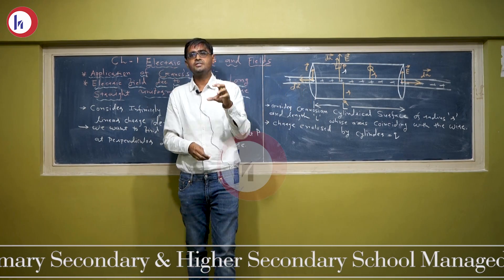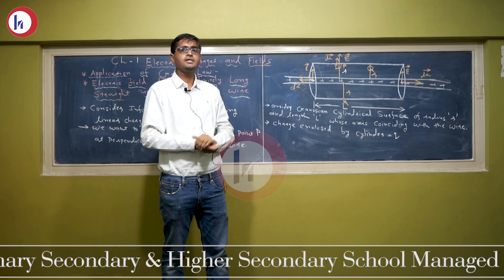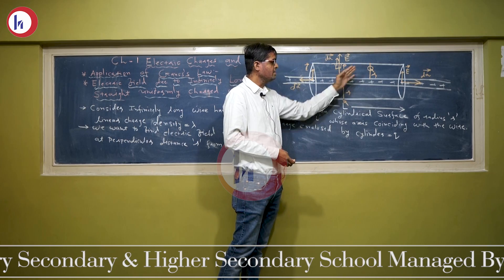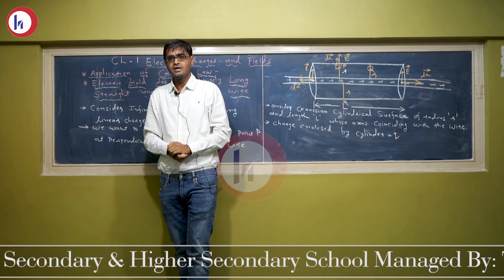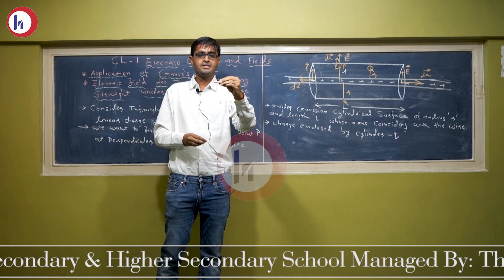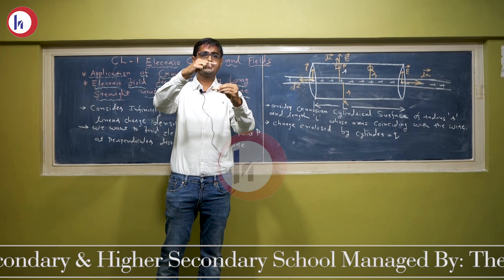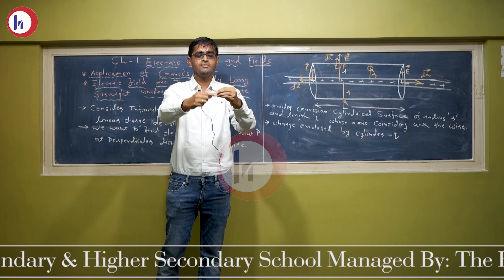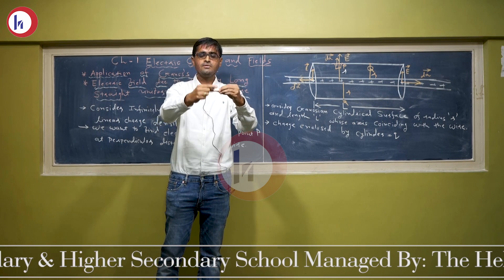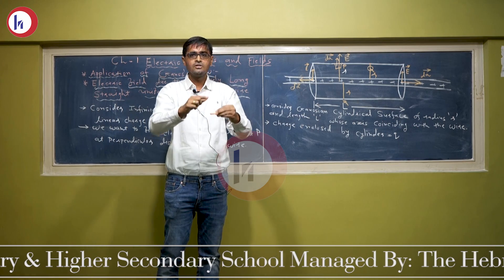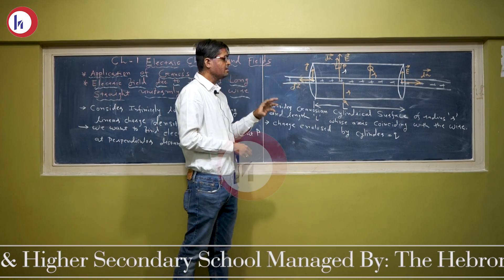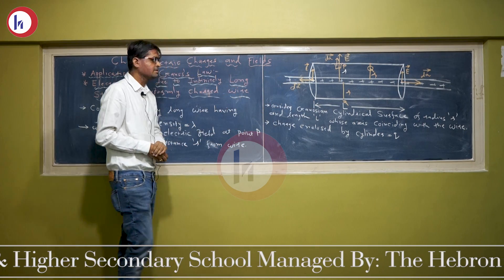Since all these points are at distance r, you can imagine that the electric field at point P, at point Q, and at point R is also constant. That is how we get a cylindrical symmetry. If you take a wire and consider all points at distance r from it, the distance is constant, and therefore the electric field is constant — giving us a cylindrical surface.